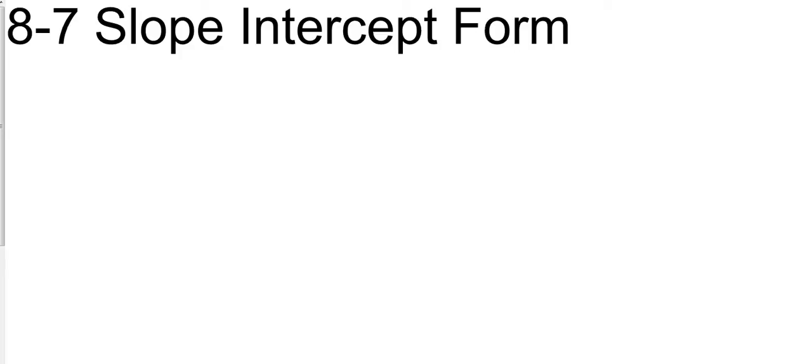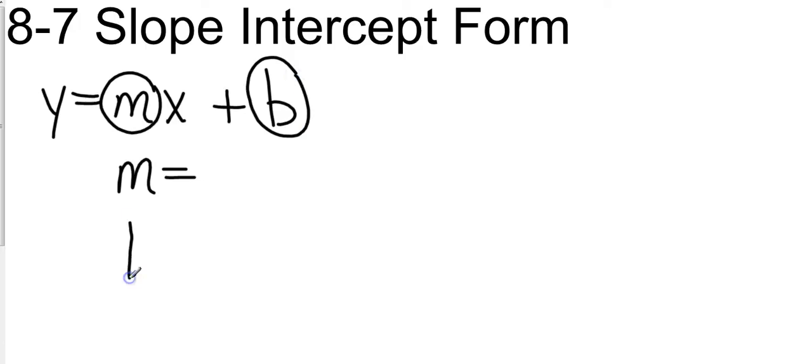One of the most important formulas in your algebra career for the remainder of middle school and high school. Slope intercept form is very simple. It is y equals mx plus b, not a 6, that's a b, where we know that y and x are part of our graphs, so we need to find out what is this m and what does this b stand for.